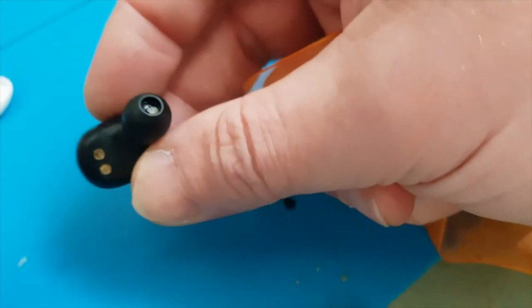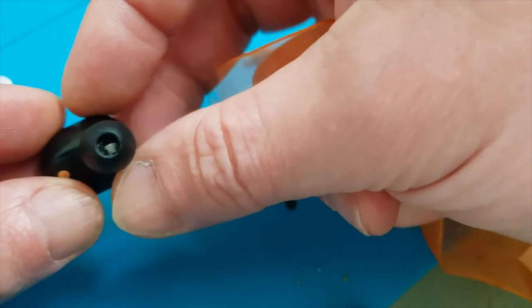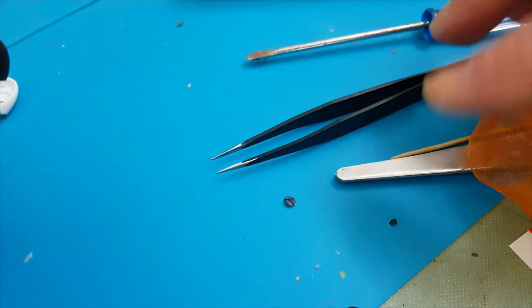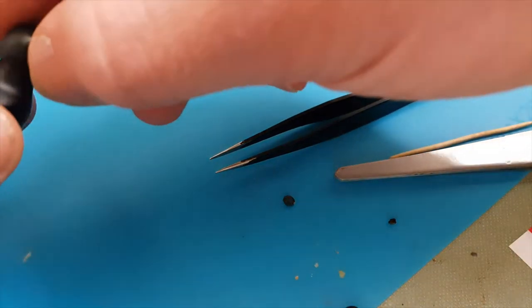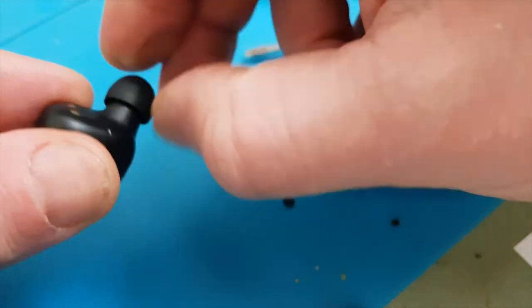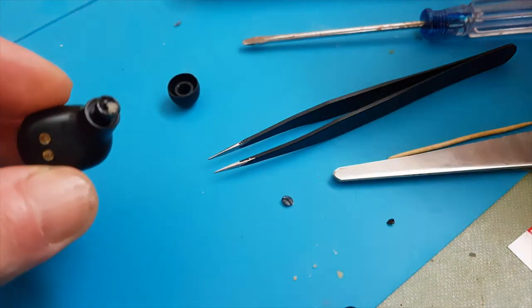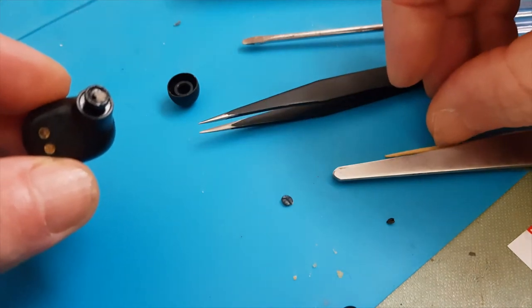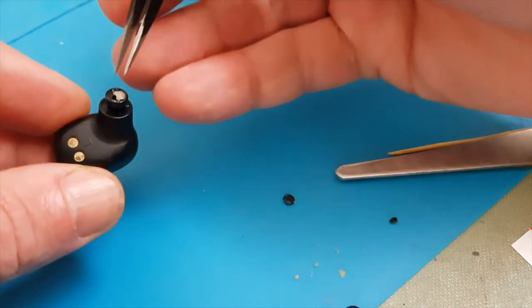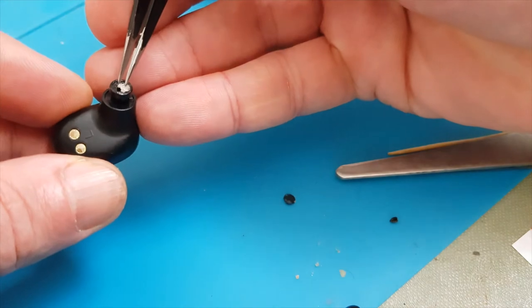Often the inner mesh grid of the headphones is damaged. This could happen for various reasons. As a result, earwax can enter the inside of the headphones. Today in a short video I will show a trick that will help restore protection to your headphones.